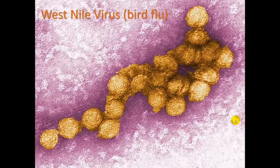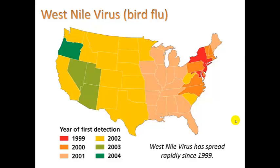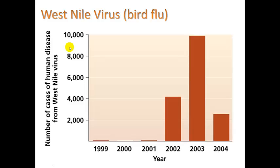The West Nile virus, also called bird flu, has been in the news in recent years. It's transmitted from infected birds to humans via mosquitoes, the vector, and causes flu-like symptoms. It's not necessarily fatal for healthy people, but can be for those whose health is compromised. It spread through the country starting in the northeast New England area in 1999, reaching Oregon in 2004. The greatest number of cases was in 2003, but by 2004 the numbers had decreased, showing we've managed to keep it at bay.